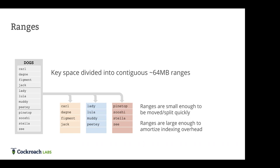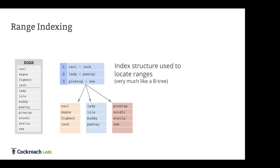Those 64-megabyte chunks are then distributed across the cluster. We write in triplicate — we create replicas so that if nodes go down, we still have data. They're small enough that we can move them around pretty easily. If they grow too big, we can split them and create new ranges. This is a key concept behind what we're doing — it's why we're able to be distributed and live very well on top of Kubernetes. If you're going to create ranges, you need an index to locate them. We implement an index with a structure similar to a B-tree, allowing very quick range scans.